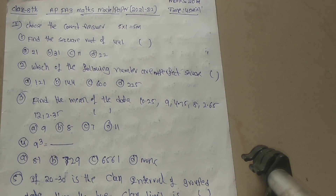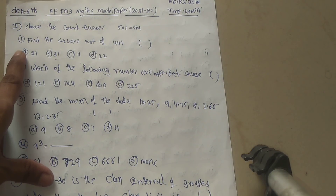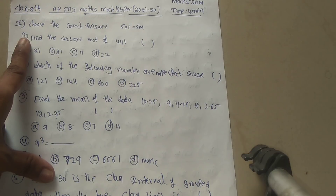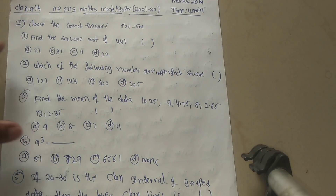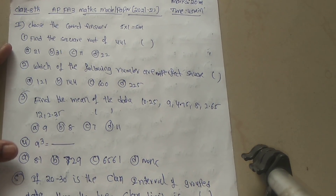Today's topic is the Class 8 APFA3 Maths Model Paper. The exam time is 45 minutes for 20 marks. First bit: choose the correct answer — 5 questions, 5 into 1, 5 marks.